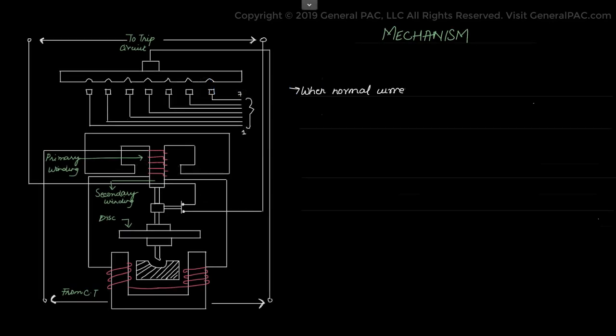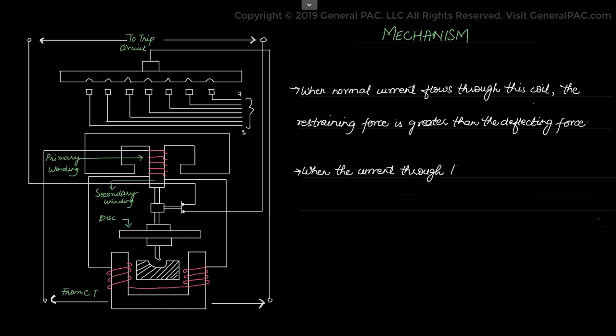How does the mechanism work for an overcurrent relay? This relay consists of a current coil and a disk which is free to rotate between the poles of two magnets. When a normal current flows through this coil, the magnetic effect generated by the coil on the disk is not sufficient to move the moving element of the relay.